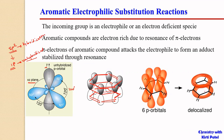We have a pi cloud above the benzene ring and a pi cloud below, which makes it an electron-rich species. Aromatic compounds are electron-rich due to the resonance of pi electrons. These pi electrons attract the electrophile to form an adduct stabilized by resonance, giving rise to aromatic electrophilic substitution reactions.